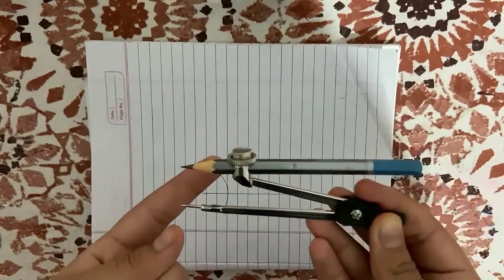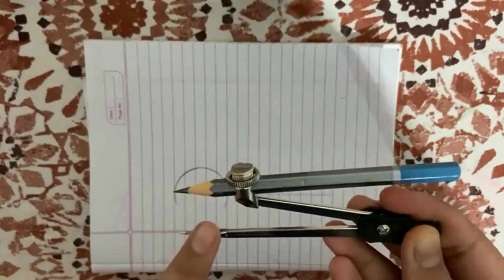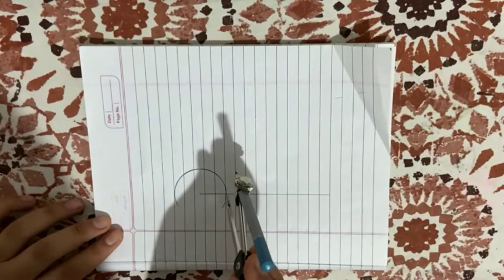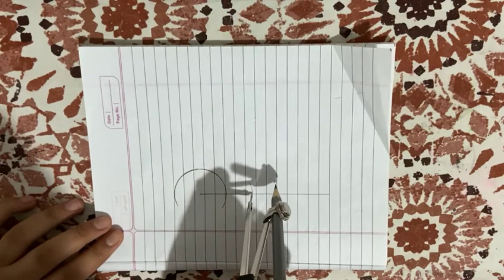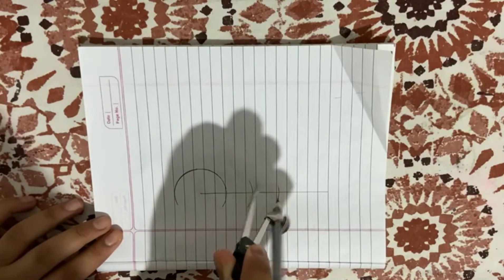After making this arc, without changing the distance between these both, keep the point here and make an arc like this, keep the point here and make an arc like this.